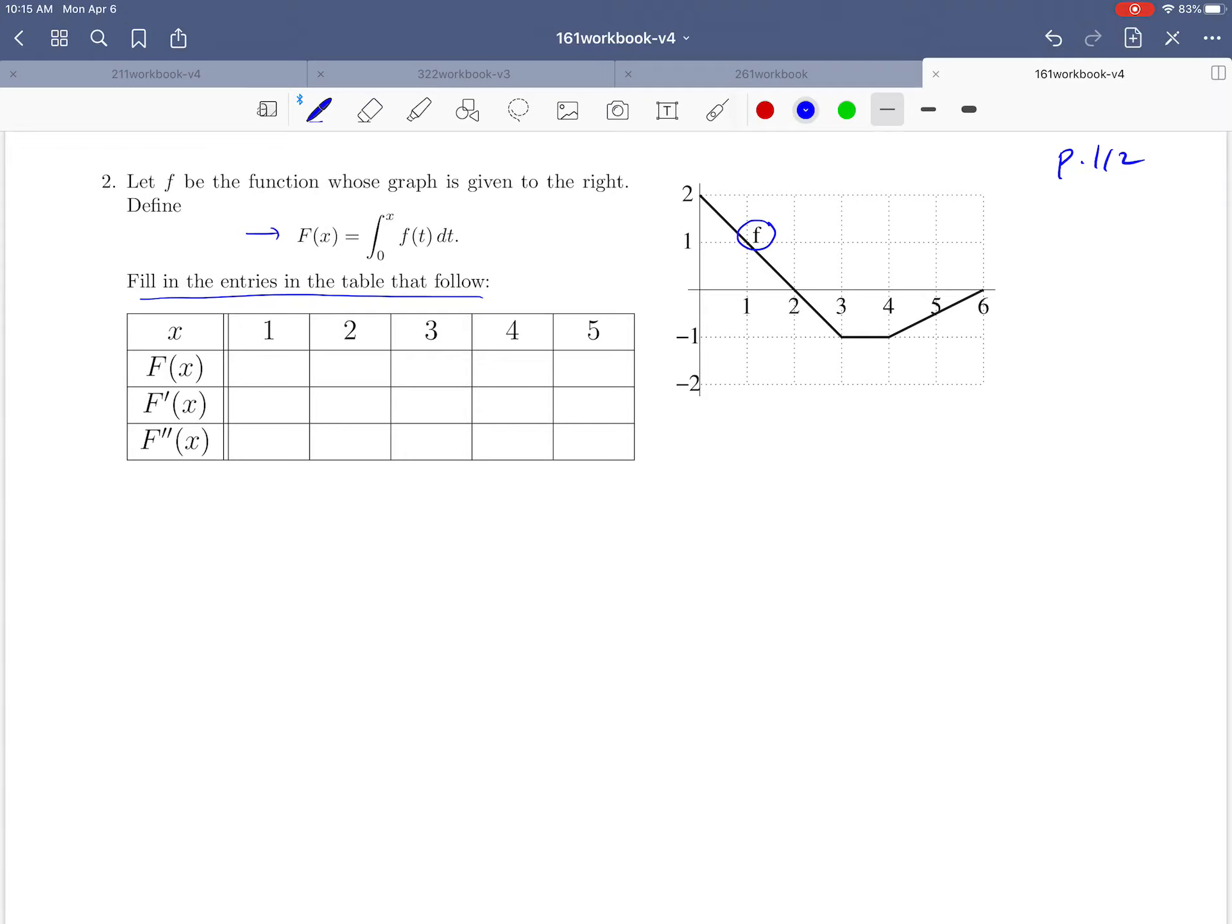The table has three different functions: F(x), F'(x), and F''(x). Since we're talking about three different functions, let's take them one at a time, starting with the first row for values of capital F.